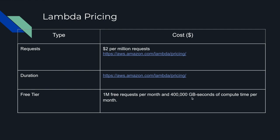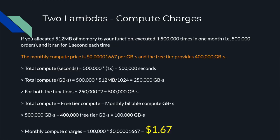There's a pricing table for GB-seconds as well. Let's imagine you allocated 512 MB of RAM for each Lambda function. As you know, the only variable you can tweak for a Lambda is the memory — allocating more memory also allocates more CPU power. These two Lambda functions are part of the order processing flow, so they execute when a customer places an order. Let's assume we get 500,000 orders per month, and it takes 1 second to process each request — 1 second for the payment Lambda and 1 second for the create-order Lambda.